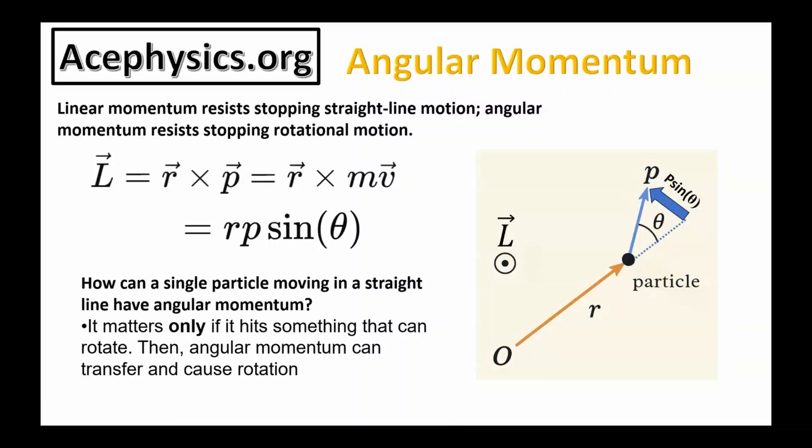A question I had when I was first learning this material was: how can a single particle moving in a straight line have angular momentum? It only matters if it hits something that can rotate. In that case, the angular momentum can transfer and cause rotation.